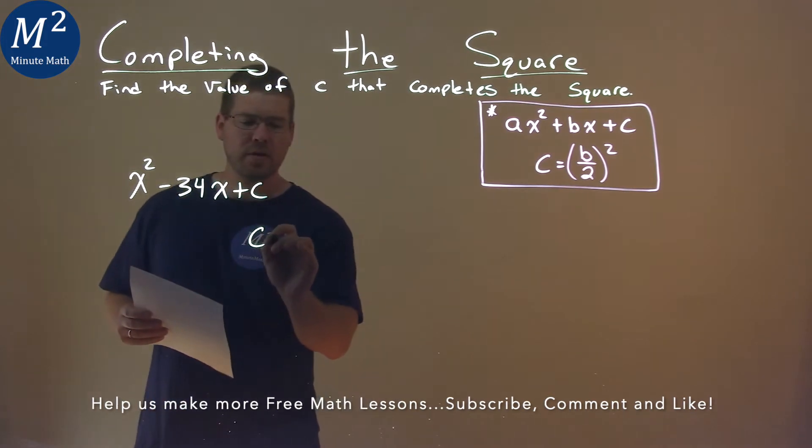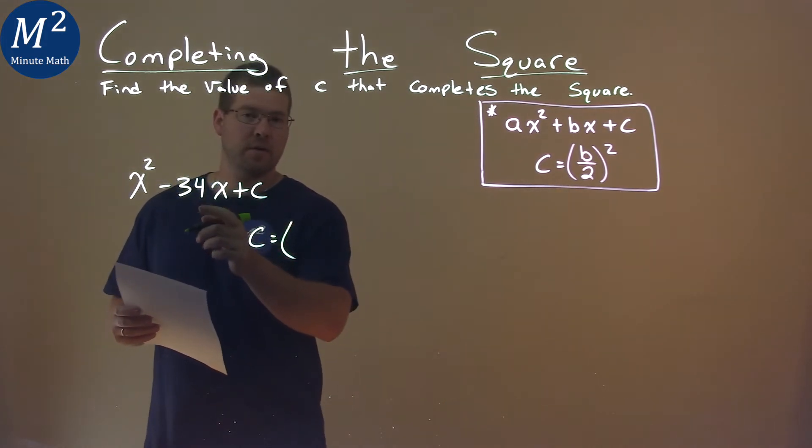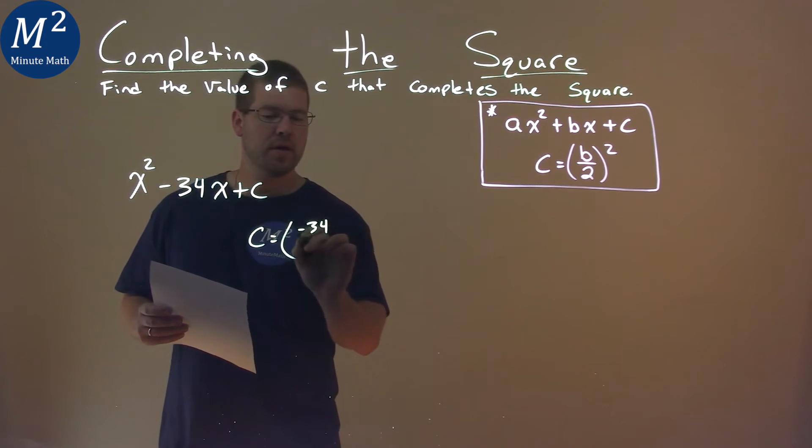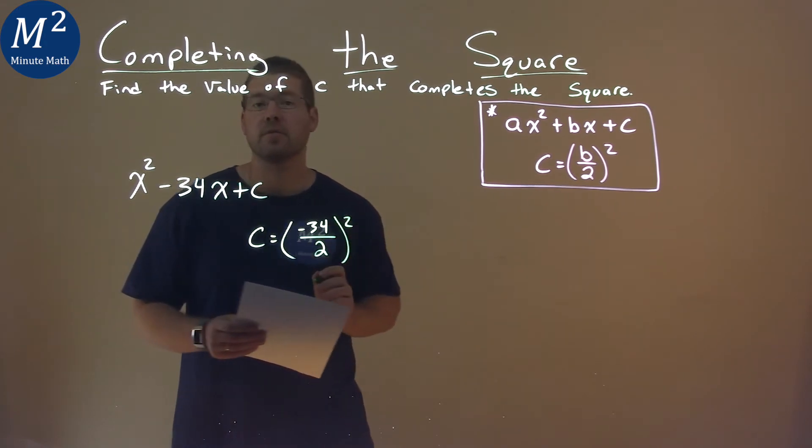Our c value here has to equal our b value, negative 34, divided by 2, all squared.